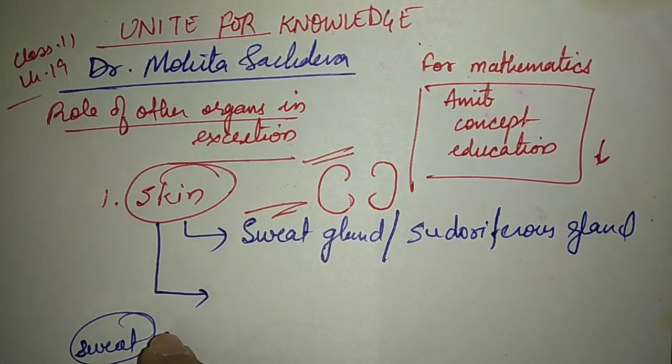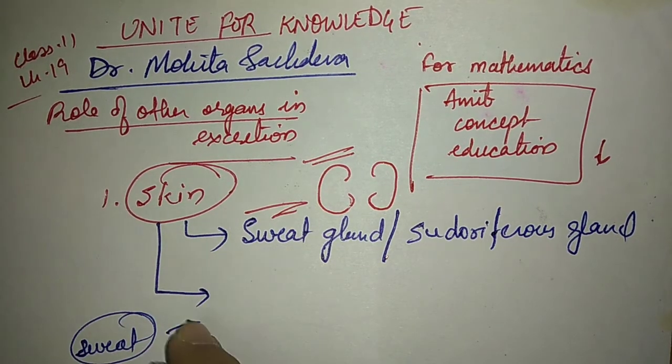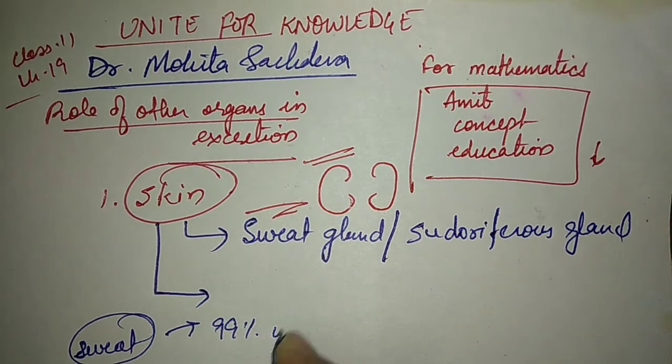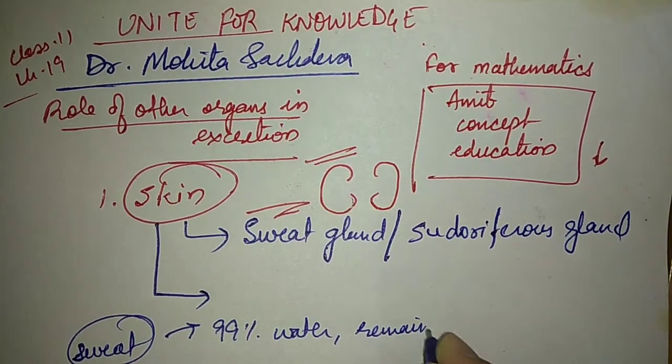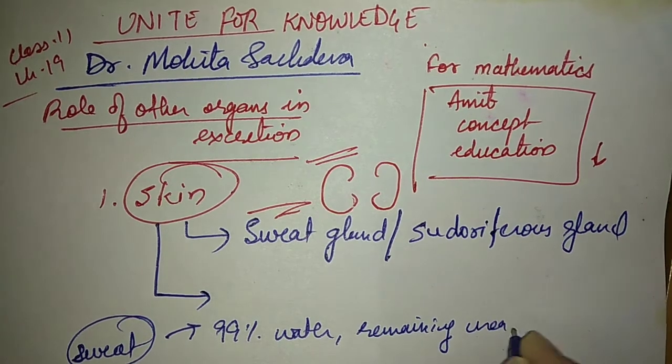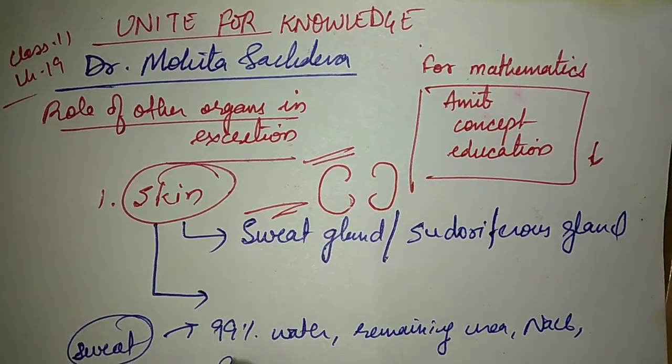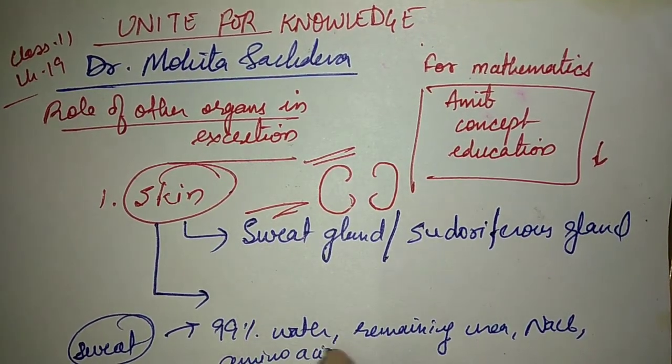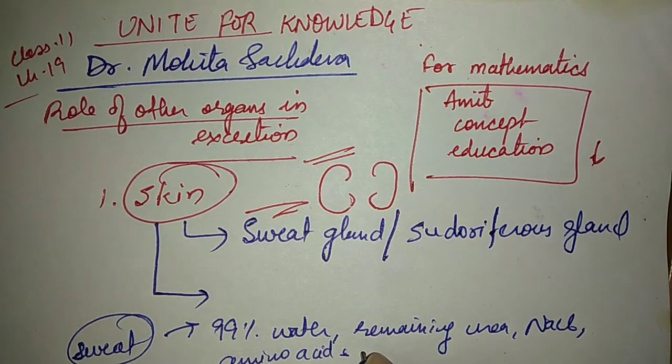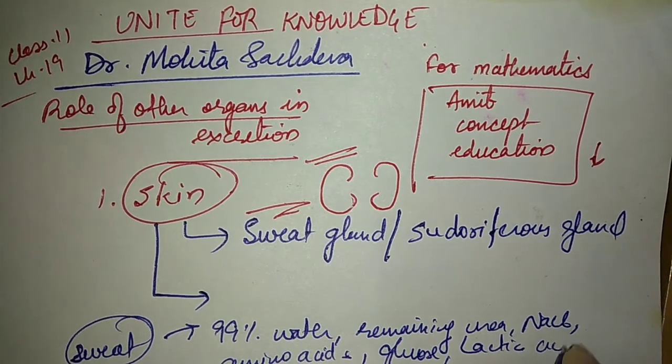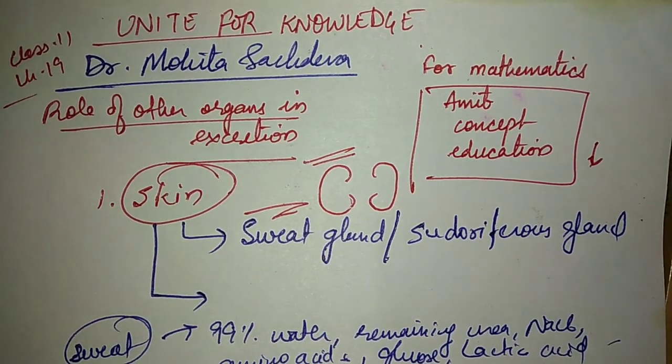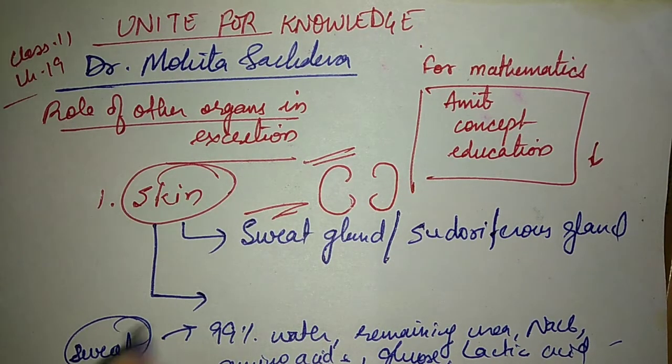When we sweat, it is the process of excretion. What is contained in sweat? First of all it contains 99 percent water, remaining urea that is left over, NaCl, amino acids, and glucose.